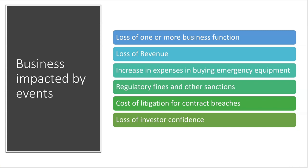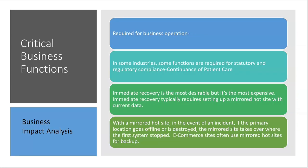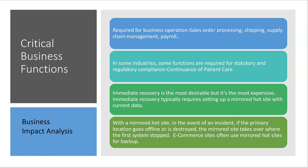An important step in a Business Impact Analysis is to identify critical business functions — these are the processes required for business operation. Critical business functions would likely include sales order processing, shipping, supply chain management, and payroll, and they vary by industry. In some industries there are functions required for statutory and regulatory compliance. For example, even during a business interruption, a hospital still has a requirement to continue patient care.